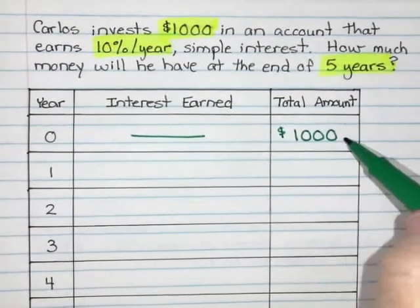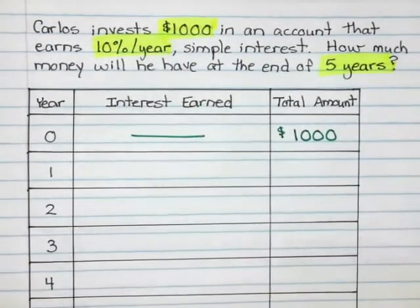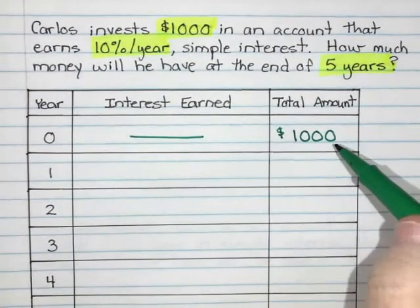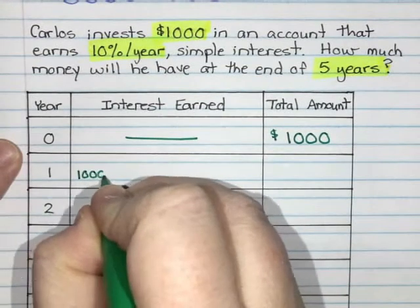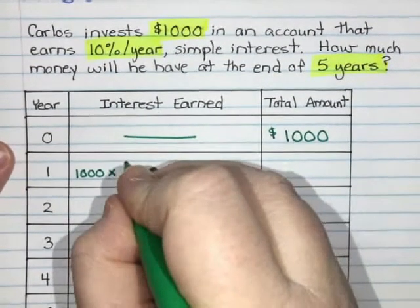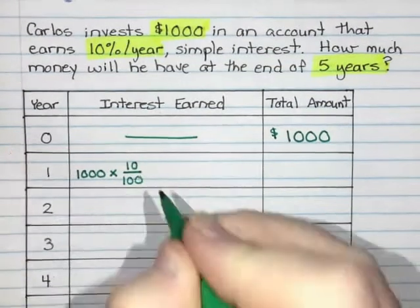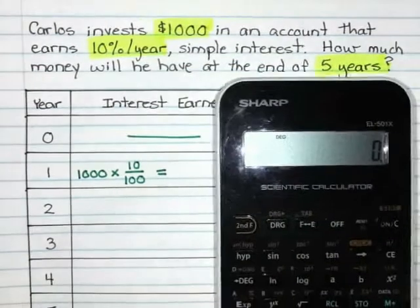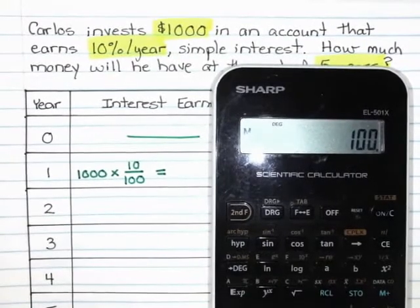So after he leaves that money there for a full year, he earns interest because he gets 10% per year. So if one year goes by, he earns 10% interest. I want to figure out what is 10% of 1,000. So to find 10% of 1,000, I'm going to take 1,000 and multiply it by 10%. But I can't just multiply it by 10. Percent means per 100, so it's 10 out of 100. I'm going to take 1,000 and multiply by 10 divided by 100, which is what 10% means. On my calculator, I'm going to do 1,000 times 10 divided by 100, and I get $100.